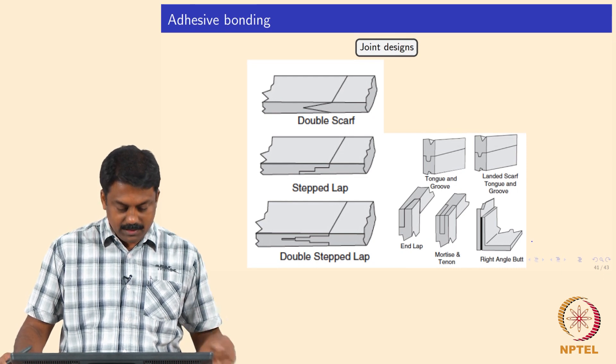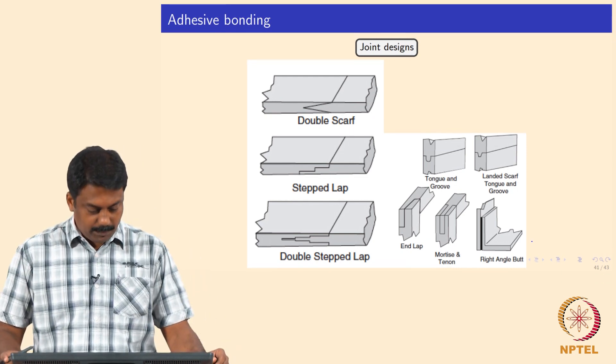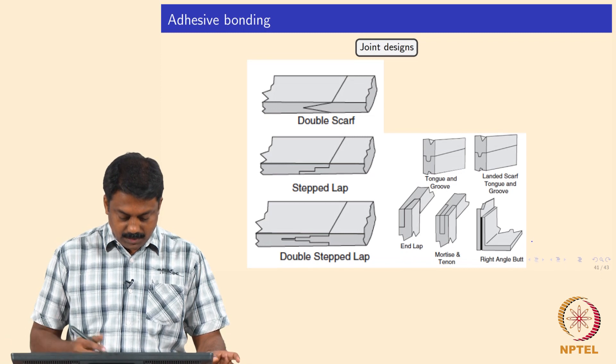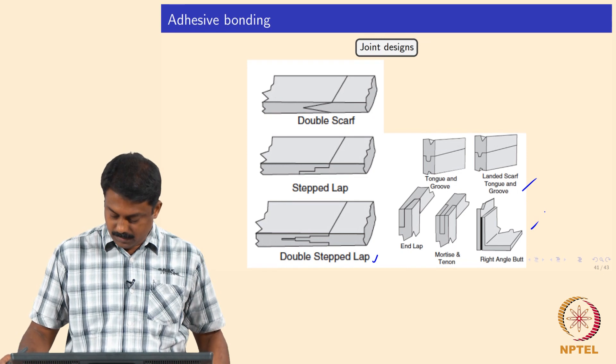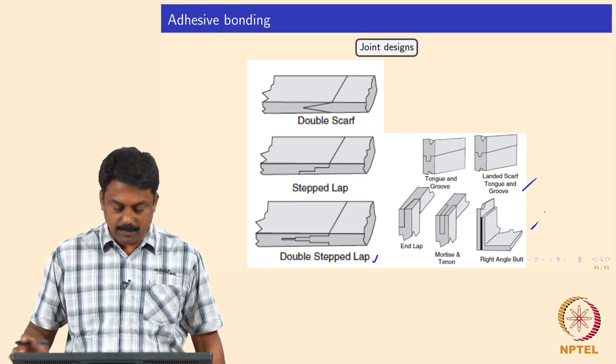In some applications where you do not need good mechanical property or crash performance, we can use adhesive joints. Some joint designs I gave are also commonly used for automotive applications: double scarf, step lap, double step lap, tongue and groove, and right angle. You can just refer from the slides.